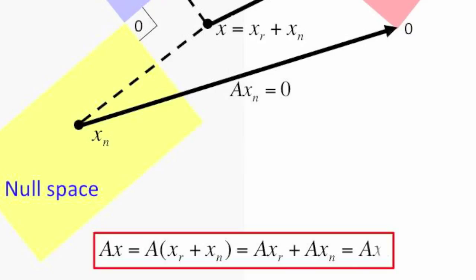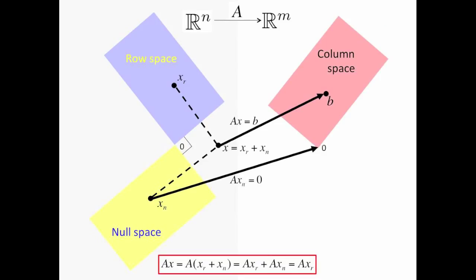We know that A times x_n equals zero, so A times x is the same as A times x_r. Therefore, A takes x_r to b as well.